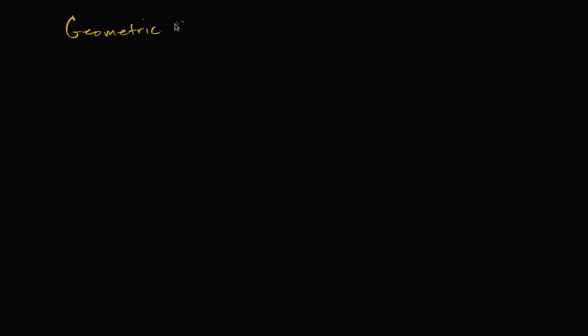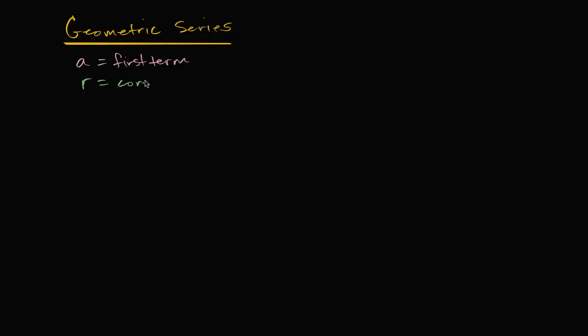Let's say that we are dealing with a geometric series, and there are some things that we know about this geometric series. We know that the first term of our geometric series is A — that is our first term. We also know the common ratio of our geometric series, and we're going to call that R — so this is the common ratio.